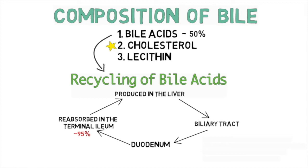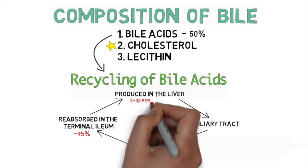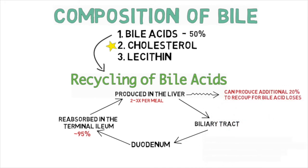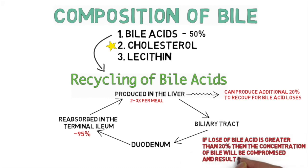The reabsorbed bile acids are shifted back to the liver to be reused in forming bile. On average, the liver can turn over bile acids two to three times per meal and recover up to 20% of bile acid loss. If losses exceed 20%, the concentration of bile is disturbed, resulting in increased cholesterol concentration. When bile acids fall below 50%, cholesterol is no longer soluble, making bile thick and prone to stone formation.